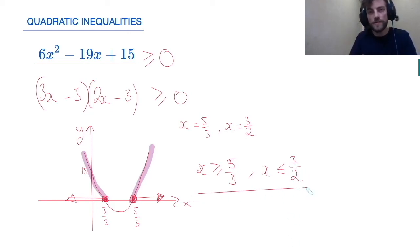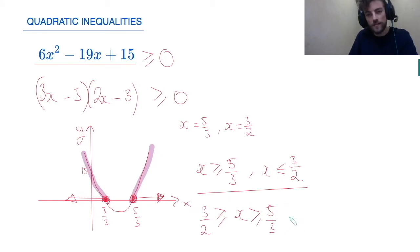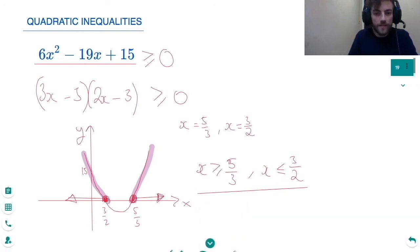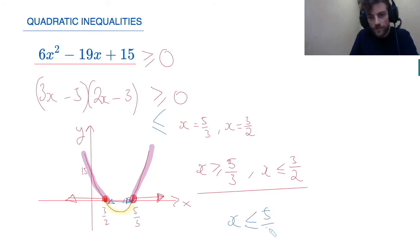Notice I have had to write this as two separate inequalities. It is not okay to write x is greater than or equal to 5/3 AND less than or equal to 3/2 in a single compound inequality, because there is no number simultaneously less than or equal to 3/2 and greater than or equal to 5/3. However, had the question been less than or equal to zero, I would be looking for the part below the axis — one continuous region — and I could write it as a single inequality between 3/2 and 5/3.